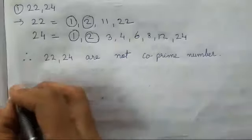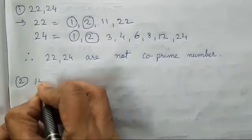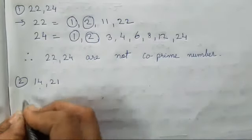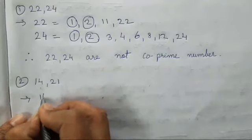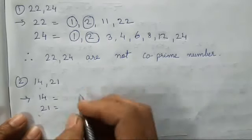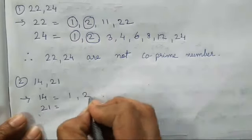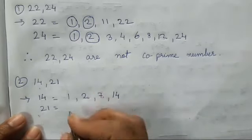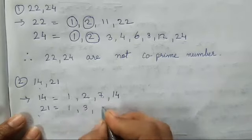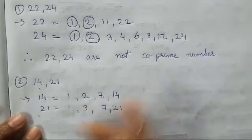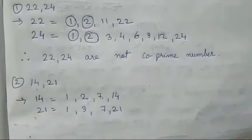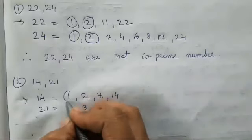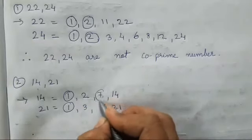It is very easy to remember. Number second is 14 and 21. So the factors of 14 and 21 are 14, 1, 2. 14, which table comes in which table? That you all have to write. Then 1, 3, 7 and 21 comes in the table.